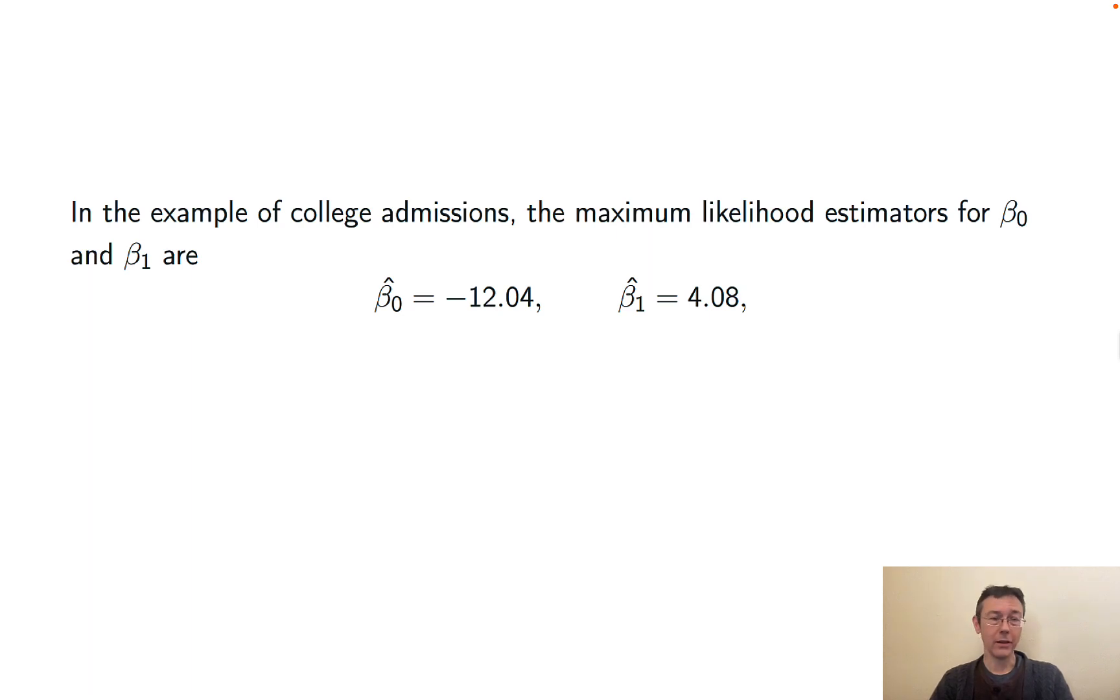Using R or other technology, you get these estimators for that college example. In this case, beta 0 hat, the sort of intercept term, is negative 12.04, and beta 1 hat, the kind of slope term, is 4.08.